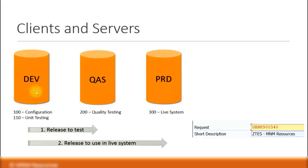The development server is where you do all your configurations — this is where you first set up the system. You can have different clients inside one server. For example, in the development server, I can have a client 100 for configuration and client 110 for unit testing. Unit testing is the testing you do after configuration to make sure the system works.